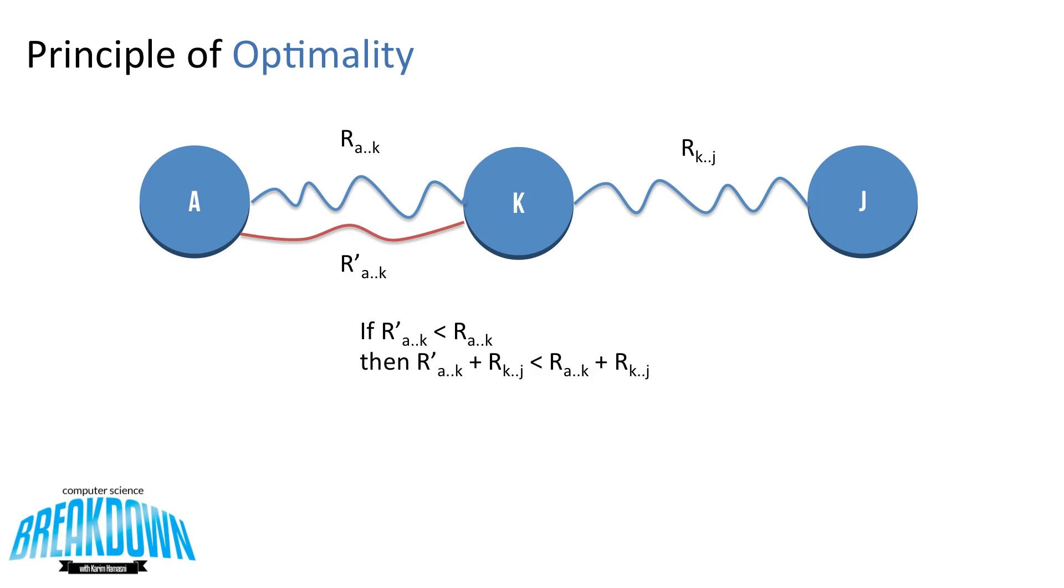If R' A to K is less than R A to K, and notice that I use less than here and not less than or equal to, because we could have more than one solution, then we know that R' A to K plus R K to J as a total is going to be a shorter path than R A to K plus R K to J.